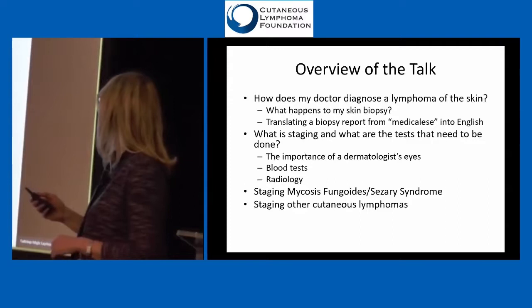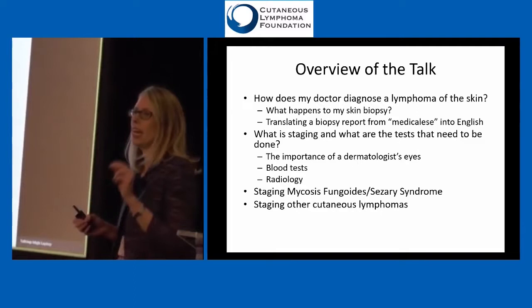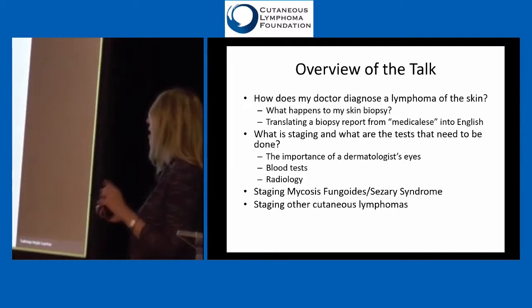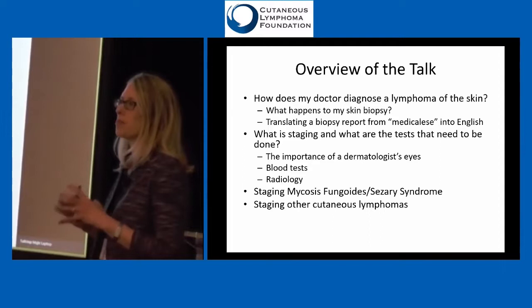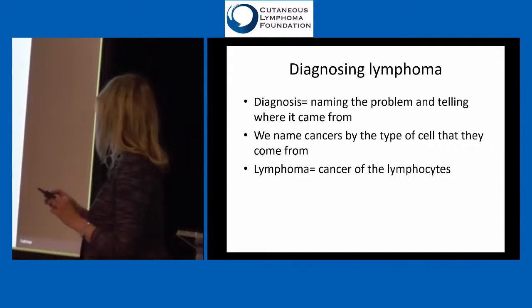I'm going to talk about diagnosis and staging. My overview: how do we diagnose a lymphoma? How do we go from skin biopsy to the diagnosis, and then translating that biopsy report into something you can all understand? What is staging, and what tests do we need to do to stage someone appropriately? We'll talk about staging mycosis fungoides and Sezary syndrome because that has the best defined staging system, and we'll hit on how you stage other lymphomas as well, which is really more of a research tool.